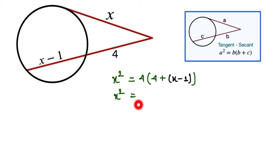So x² equals 4 times (3 plus x). This gives us x² equals 12 plus 4x.